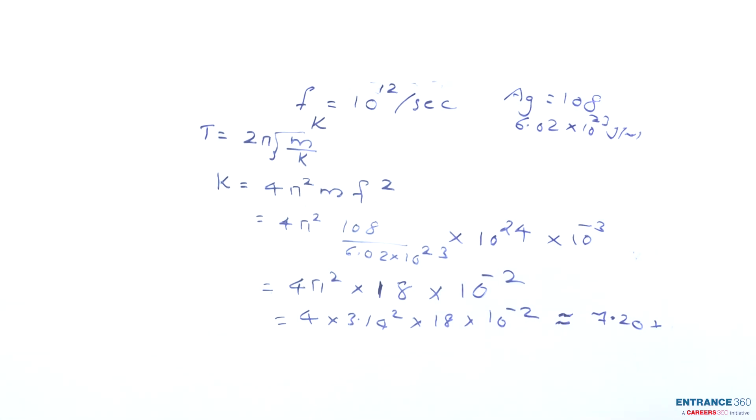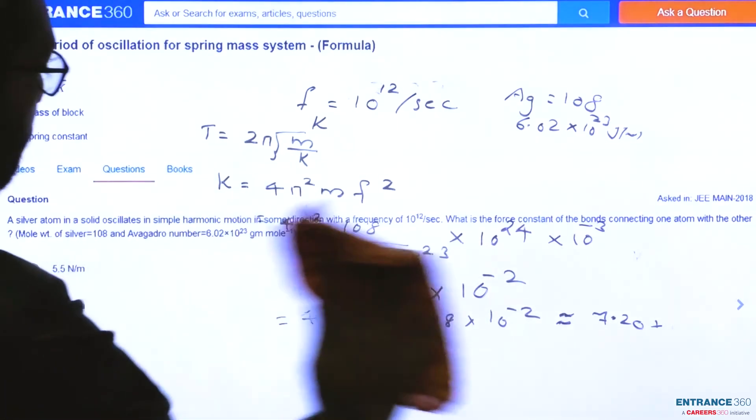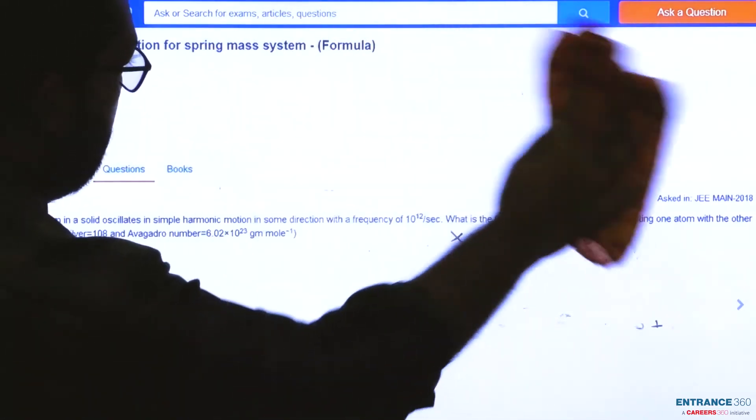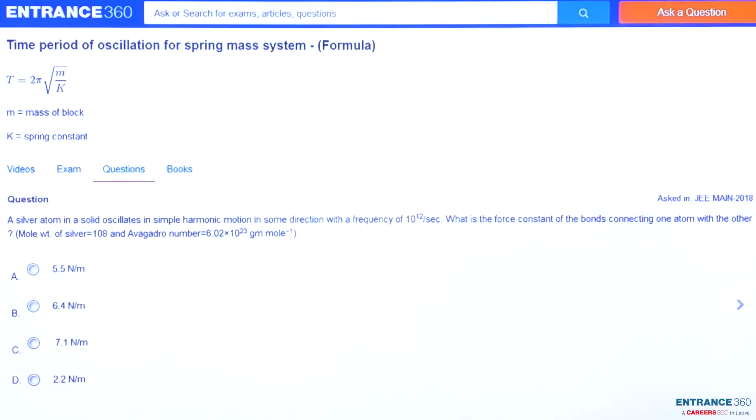Let's go for the option near to 7.2. We have one option that is 7.1 Newton per meter. Right answer is C.